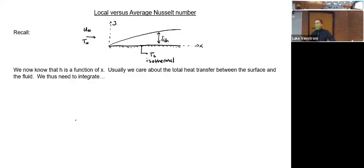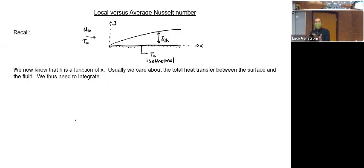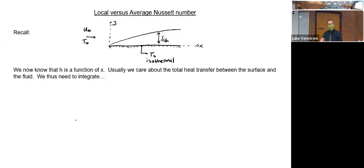Really what we usually care about is the total heat transfer. There's some surface that flow is going over, and we want to know how much heat is being transferred from the surface into the fluid. We know that the convection coefficient varies as a function of position. So ultimately what we have to do is integrate. We have something that varies as a function of position and we want to add it all up — whenever things are varying as a function of position, that means integration.